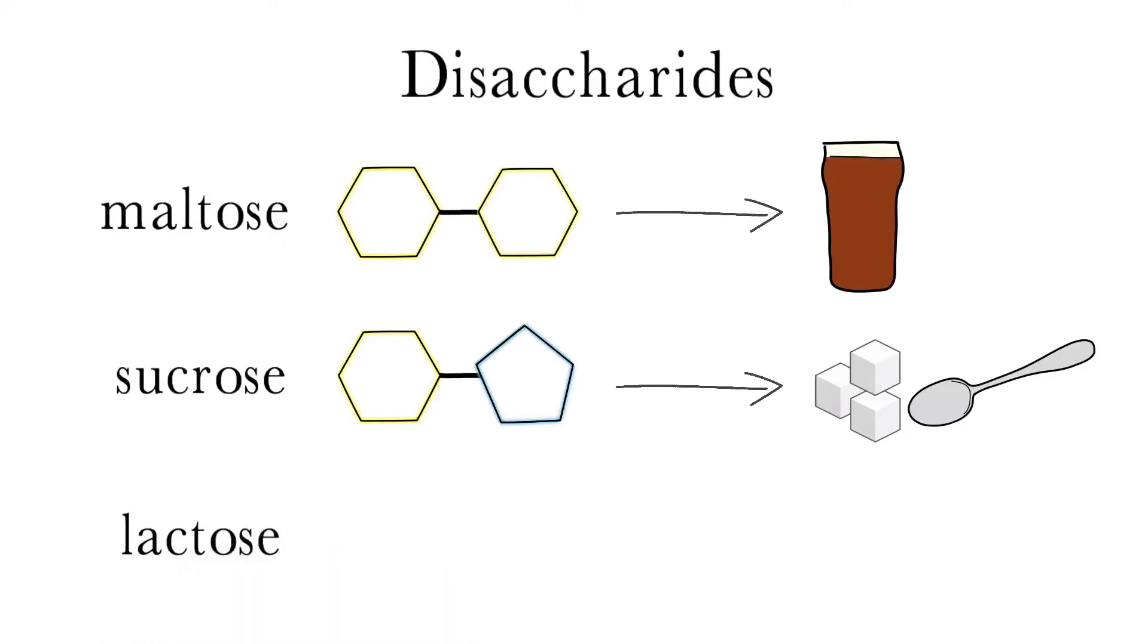The third is lactose, which is formed by linking a molecule of glucose and galactose. Lactose is the sugar found in milk.